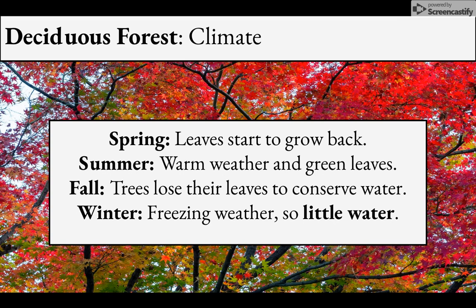Then you get back to spring — this is when the leaves start to grow back because the water melts and the trees are able to get water again. Spring is also when a lot of spring flowers start growing, when it gets warm enough for them to grow again.